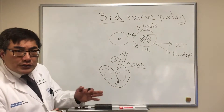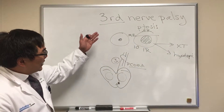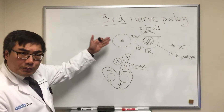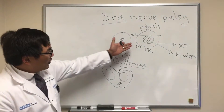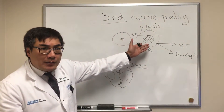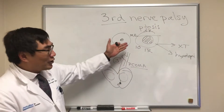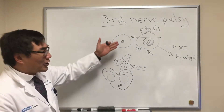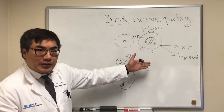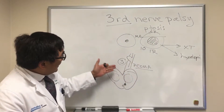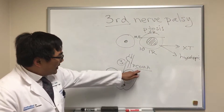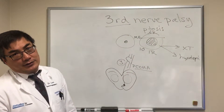The most dangerous thing in a new acute third nerve palsy — with or without pupil involvement, with or without partial or complete ptosis, with or without partial or complete muscle involvement — is a PCOM aneurysm.